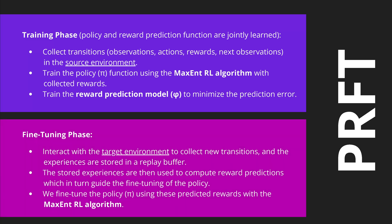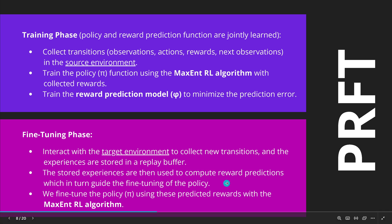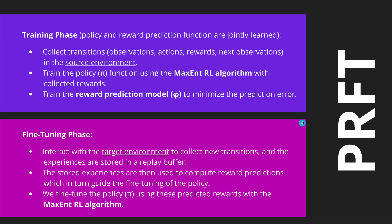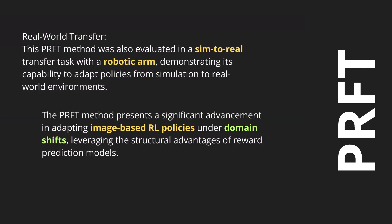In Phase 2, the fine-tuning phase, we interact in the target environment, collect new transitions, and store experiences in a replay buffer. Those stored experiences are used to compute the reward prediction, which in turn fine-tunes the policy using the maximum entropy reinforcement learning algorithm. This methodology was also evaluated on a simulation-to-real transfer task with a robotic arm, demonstrating its capability to adapt policies from simulation to real-world environments.